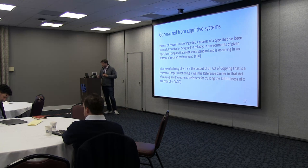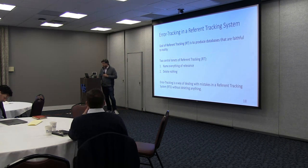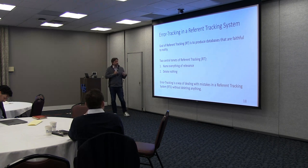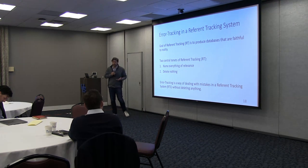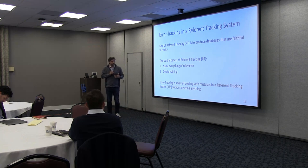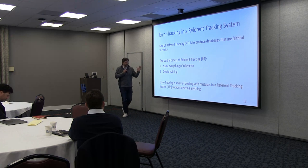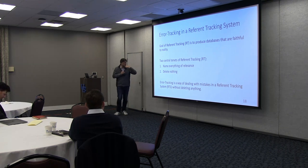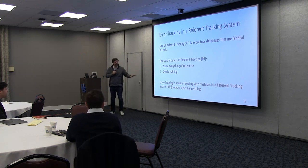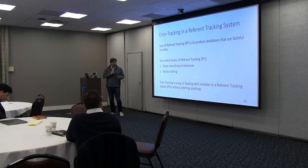Back to warrant — so why is this important? What can we do with this? Well, one thing we can do is use it in systems that want to track errors, do something useful with errors, and help us know the consequences of our mistakes and how to avoid them. One such system would be an error tracking system and a reference tracking system. Two central tenets of reference tracking: you name everything, so everything gets a UID, and you delete nothing. You don't want to delete your errors; you want to keep them and be able to roll things back to appreciate what the errors did.